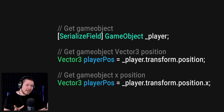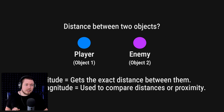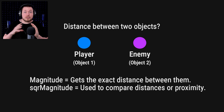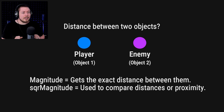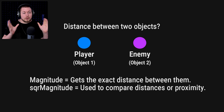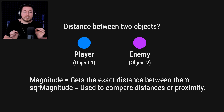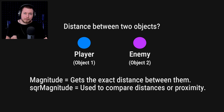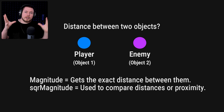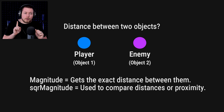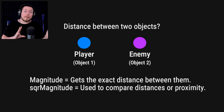Now let's talk about calculating the distance between two game objects inside our scene. In this example, I have a player as game object number one and an enemy as game object number two. To get the distance between two game objects you calculate something called the magnitude. The magnitude is used to get the exact distance, but we also have something called squared magnitude, which is used when we want to compare distances or proximities of game objects between one another.